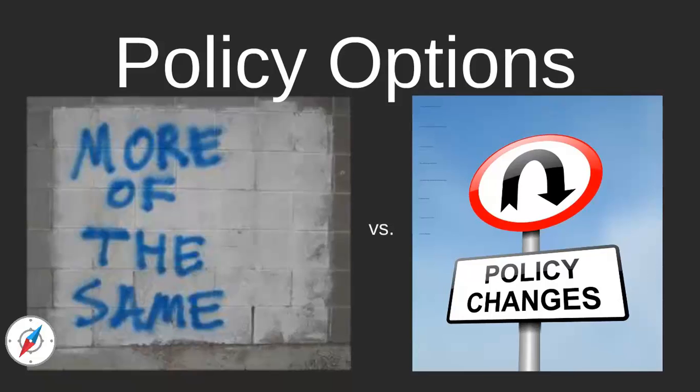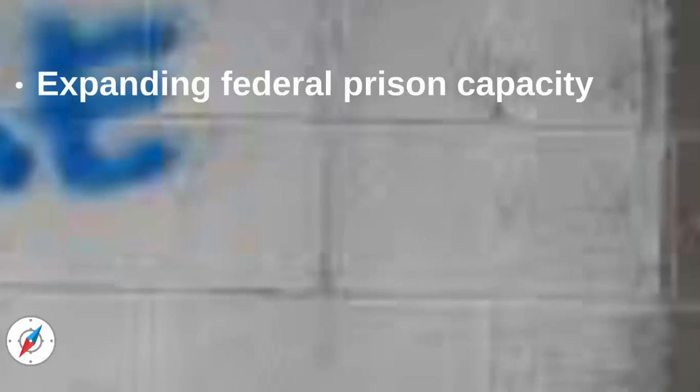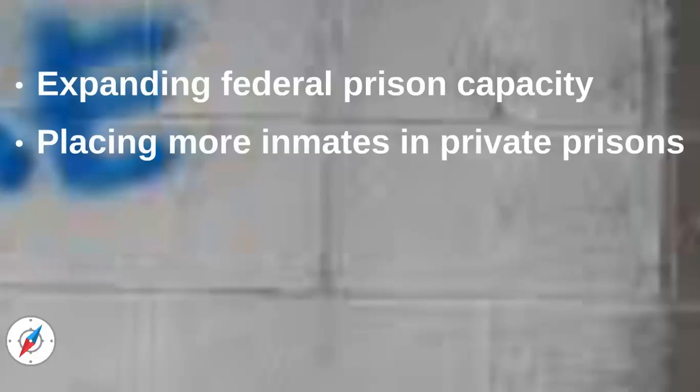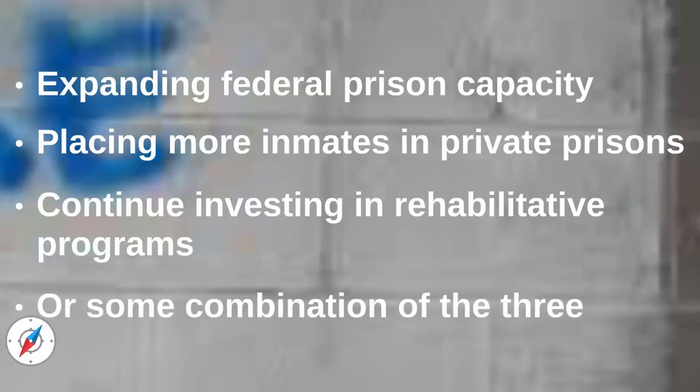The CRS finds that there are two main ones: either do more of the same to enable a larger federal prison population, or make policy changes to reduce the number of federal prisoners. If no major policy changes are made, Congress could address the growing federal prison population by: 1) expanding federal prison capacity, 2) placing more inmates in private prisons, 3) continuing to invest in rehabilitative programs, or some combination of these three.